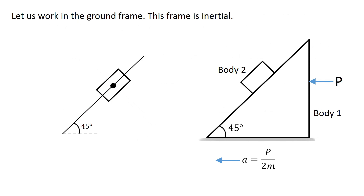Now let us solve this problem by working in the ground frame. This frame is inertial. In this frame, body 2 is moving in the left direction with the acceleration a equals p over 2m. The forces acting on body 2 in this frame are: contact force by body 1 normal to the incline, and the pull of the earth mg vertically downward.